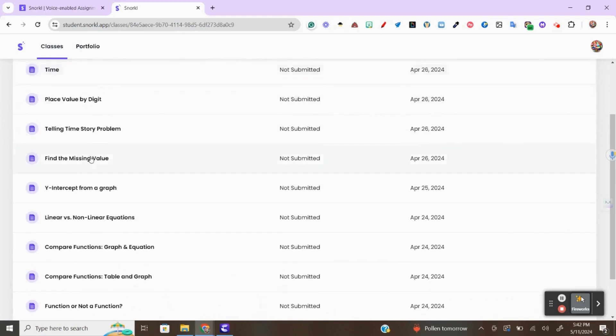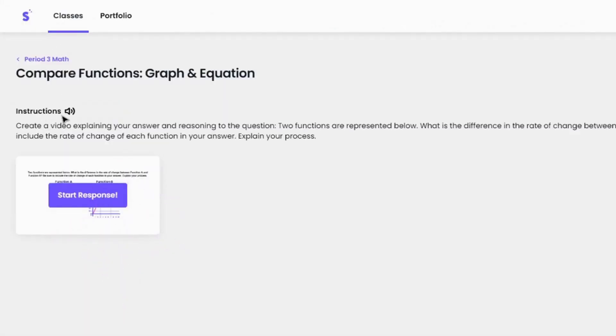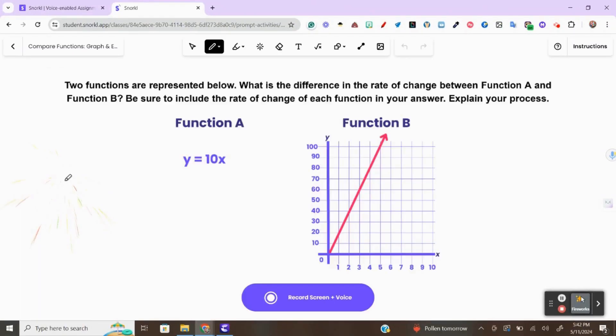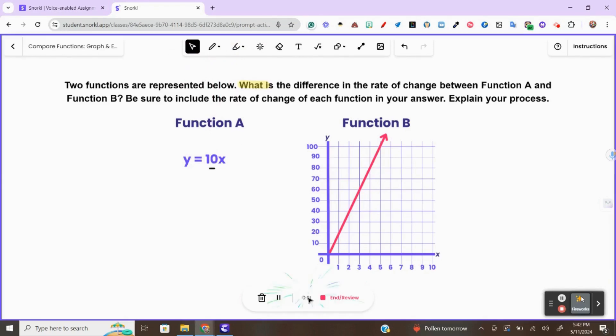Students sign into their classroom, find their assignment, have the directions read to them or they can read it on their own. They can start their response, use the pen tool or the highlighter tool to figure out what their answer is. And when they're ready to record, they hit the record button and submit their response when they're finished.